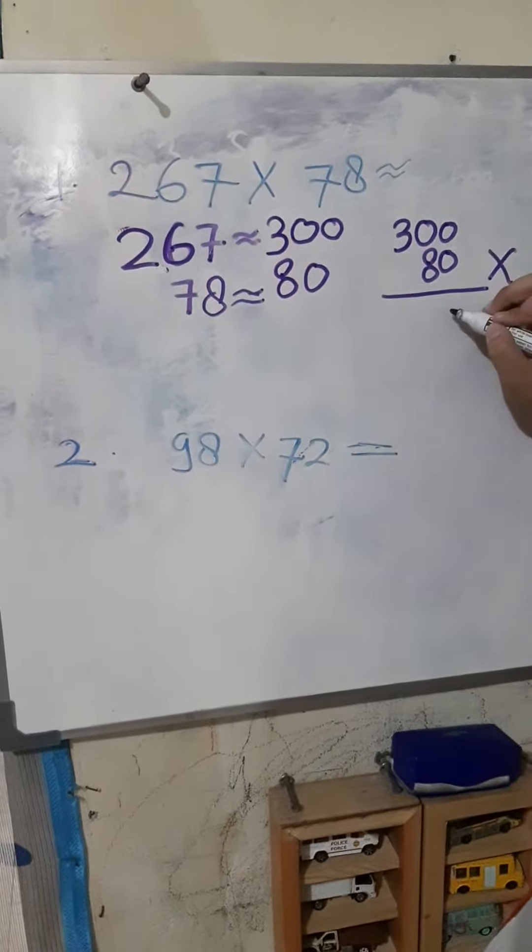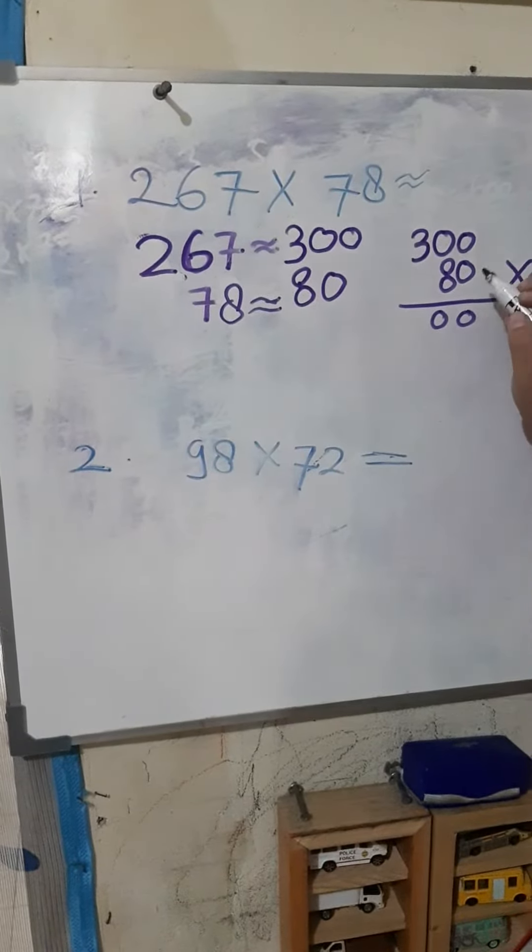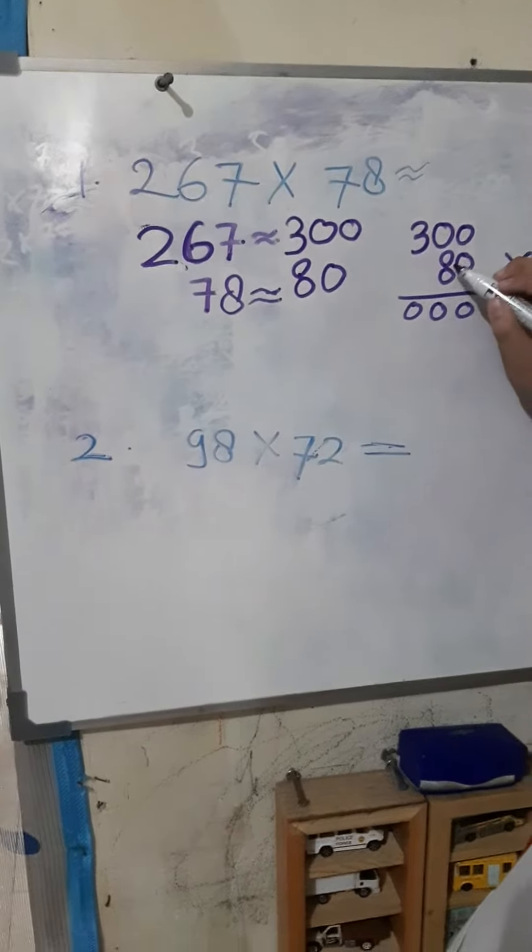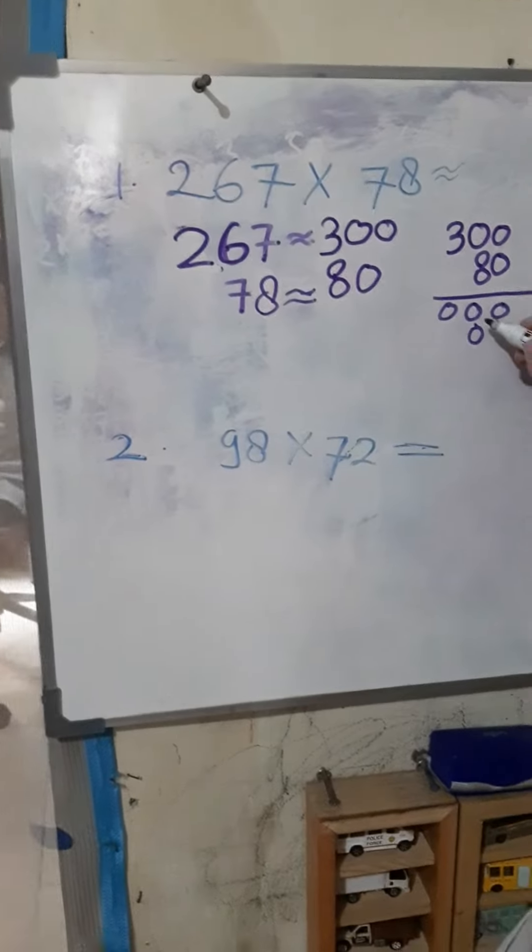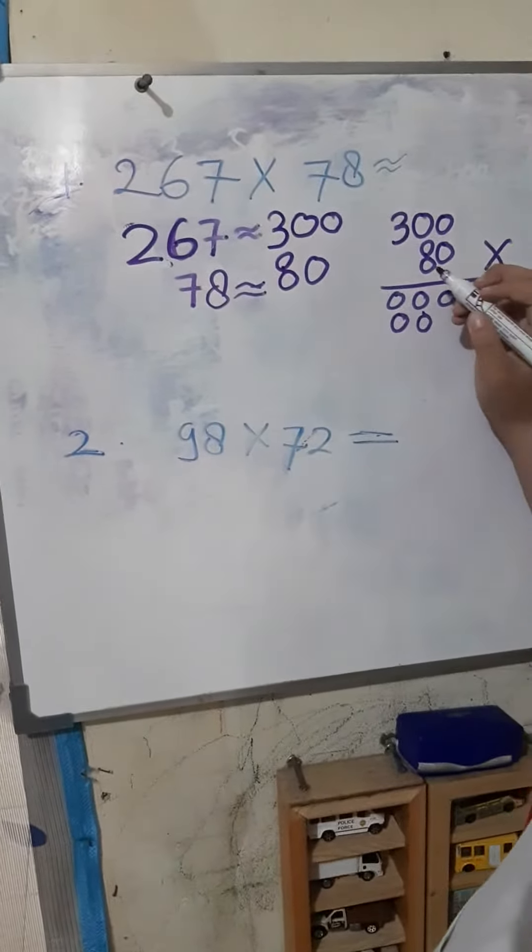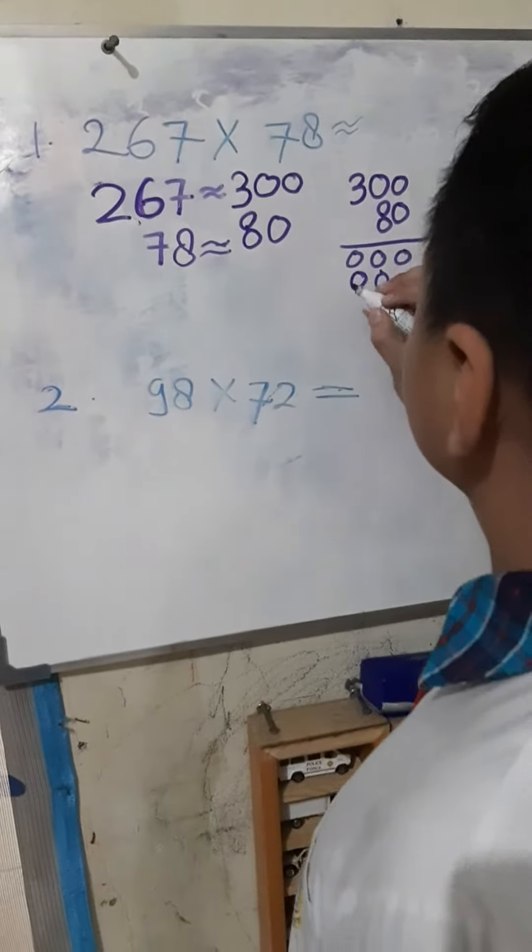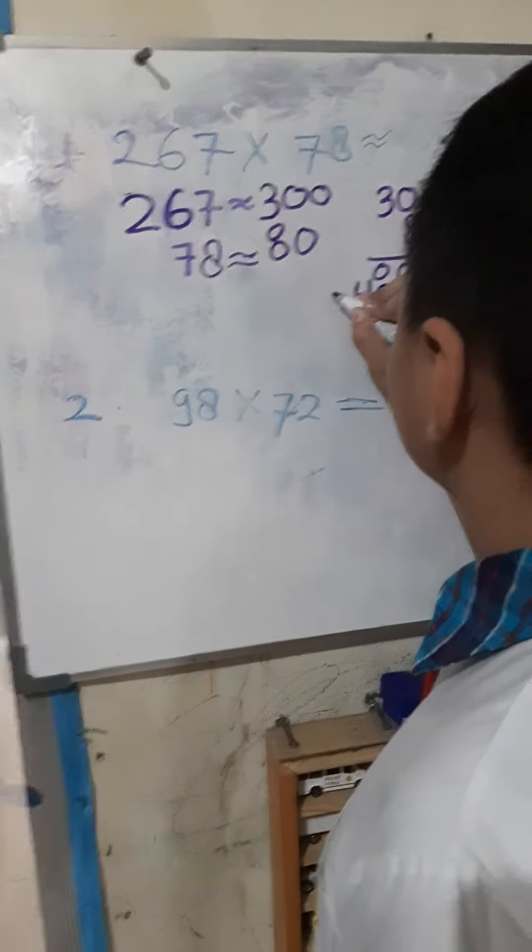0 times 0 equals 0. 0 times 0 equals 0. 0 times 3 equals 0. 8 times 0 equals 0. 8 times 0 equals 0. 8 times 3 equals 24, 4 times 4.